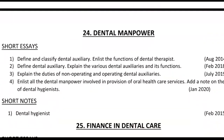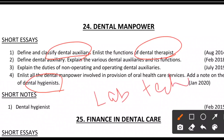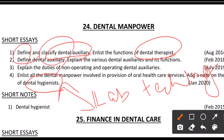Dental manpower is an important chapter. Auxiliaries are classified as operating and non-operating. Sub-topics that may be asked include dental therapist, dental hygienist, school dental nurse, expanded function auxiliary, and levels of supervision. In India, only dental hygienists and lab technicians are available. When answering, define, classify, and write about one sub-topic under each category.